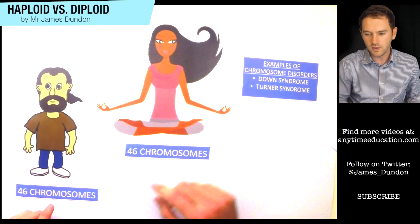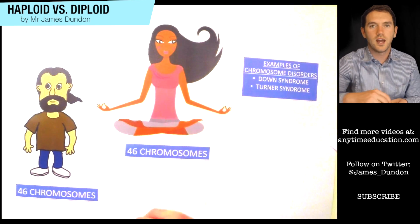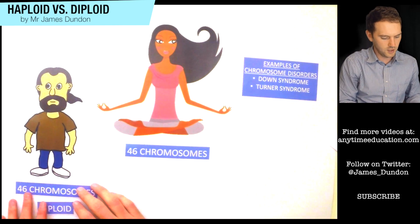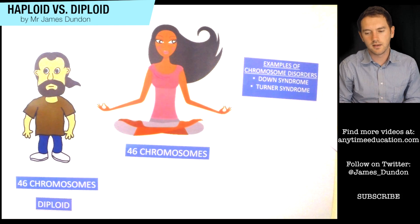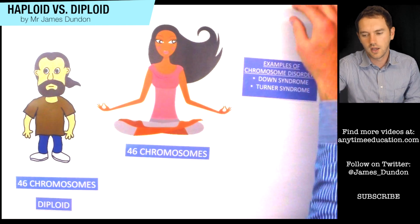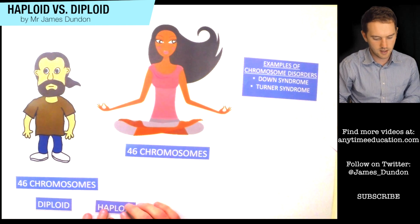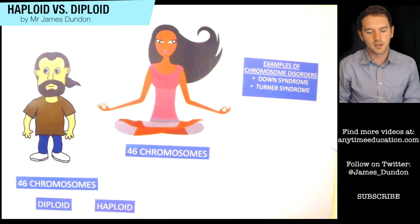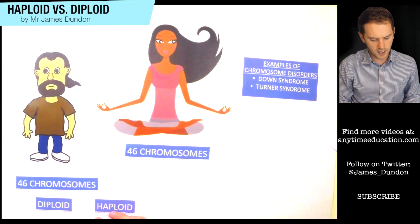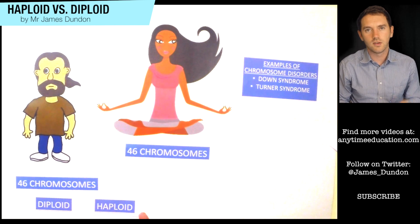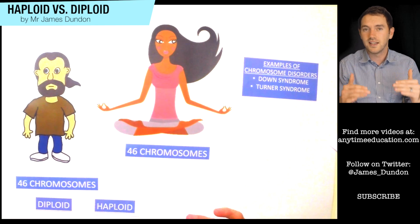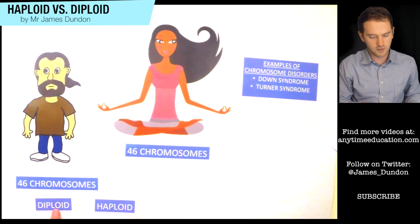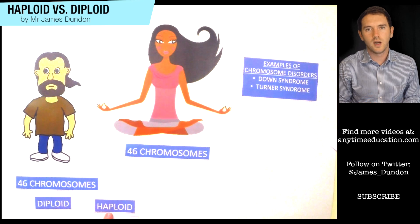So what that means is: because we've got 23 pairs, we call that diploid. We call having 23 pairs diploid. If we were to have only one of the chromosomes from each pair, we would be called haploid — we'd have half the number of chromosomes. So really, the question is: do we have both chromosomes, one from mum and one from dad? We call those homologous chromosomes because they contain genes that code for basically the same thing. Diploid means we've got two copies; haploid means we only have one copy.